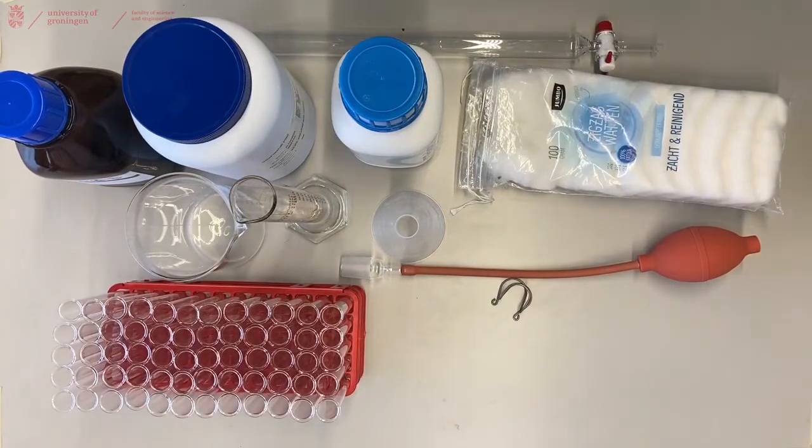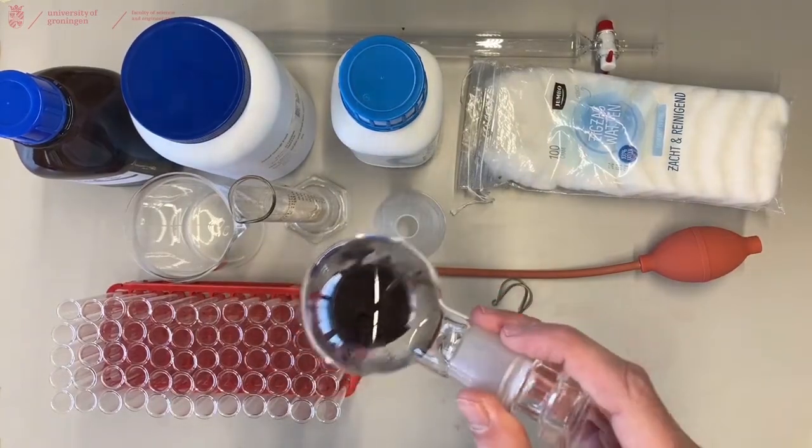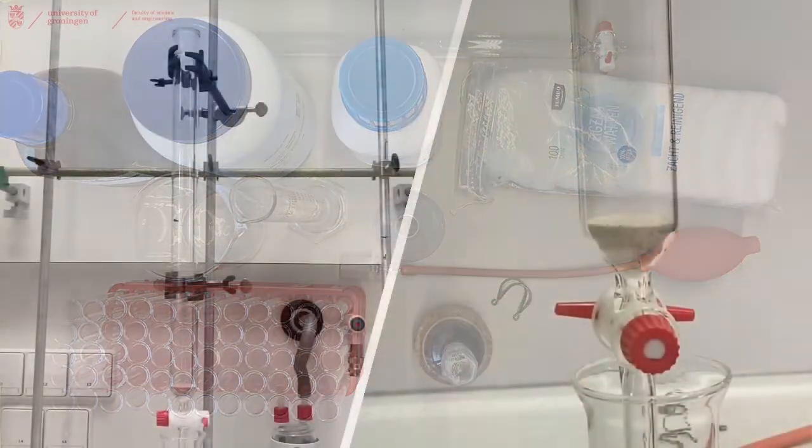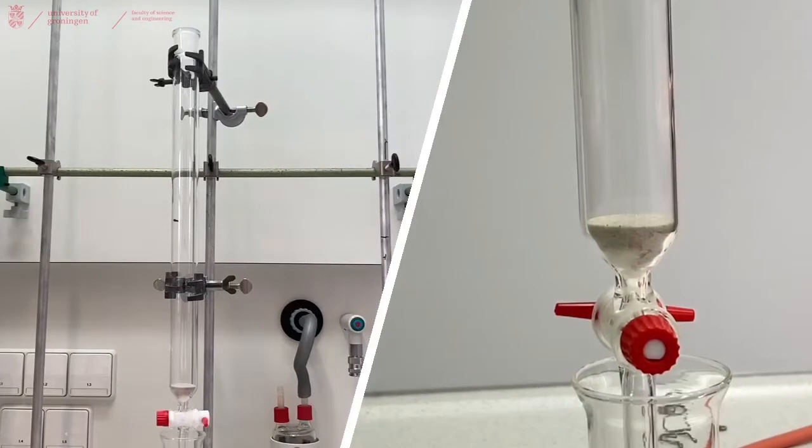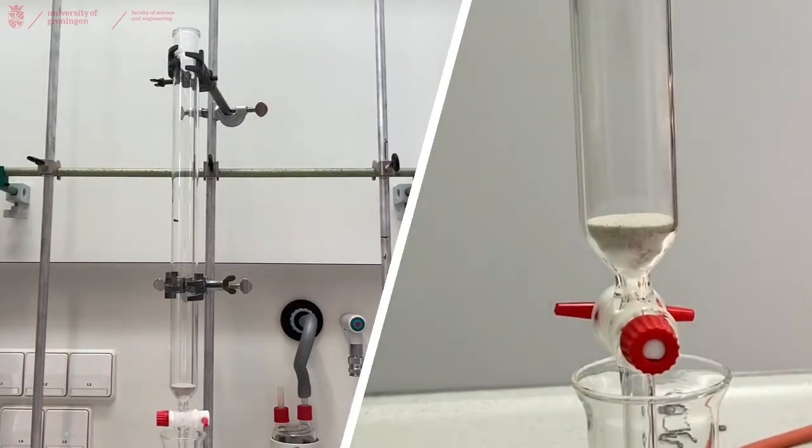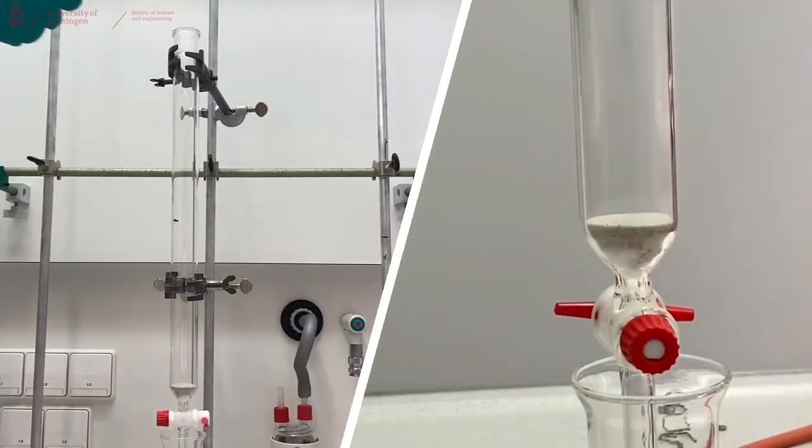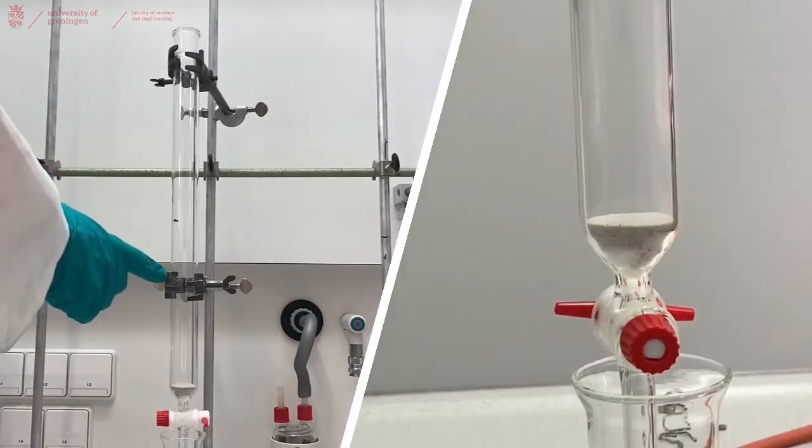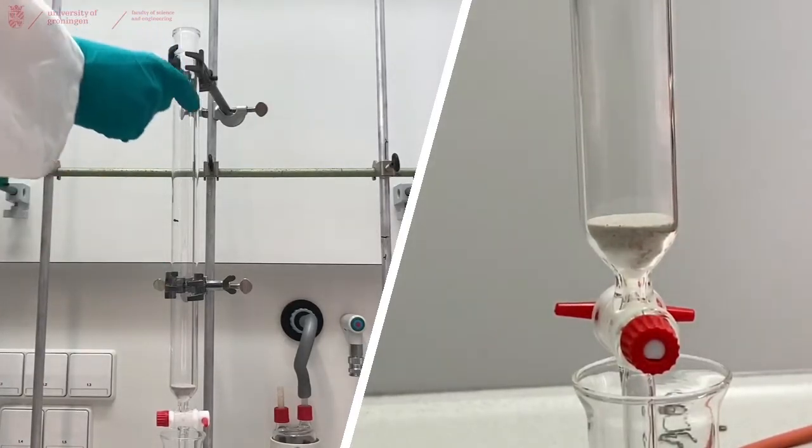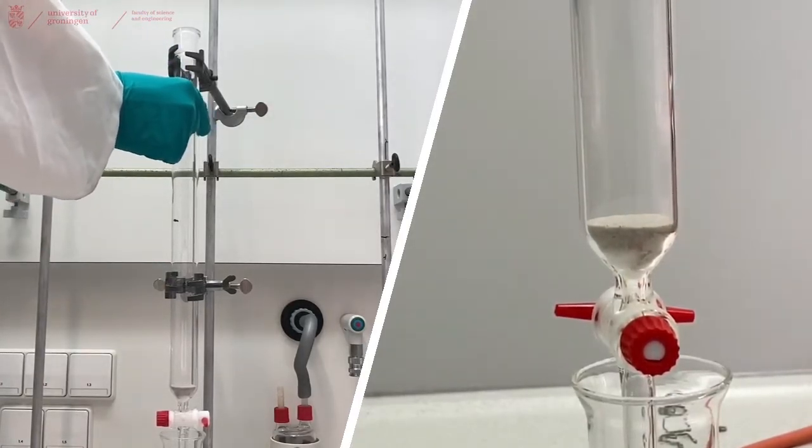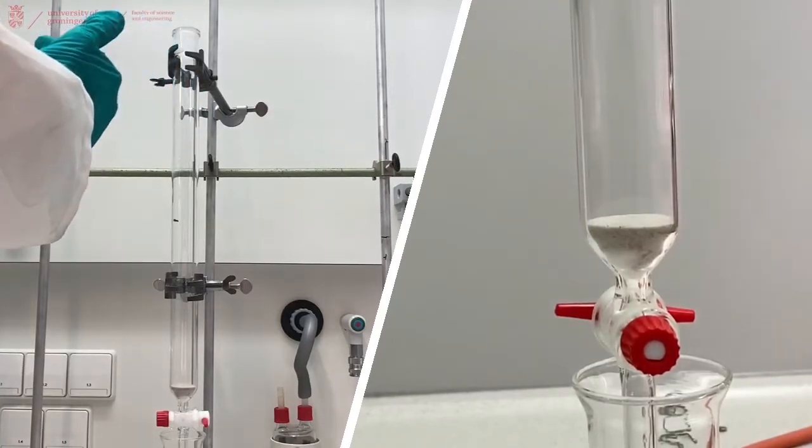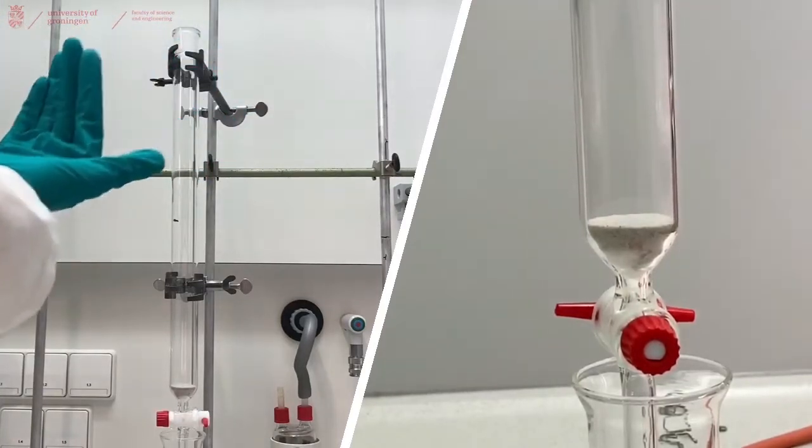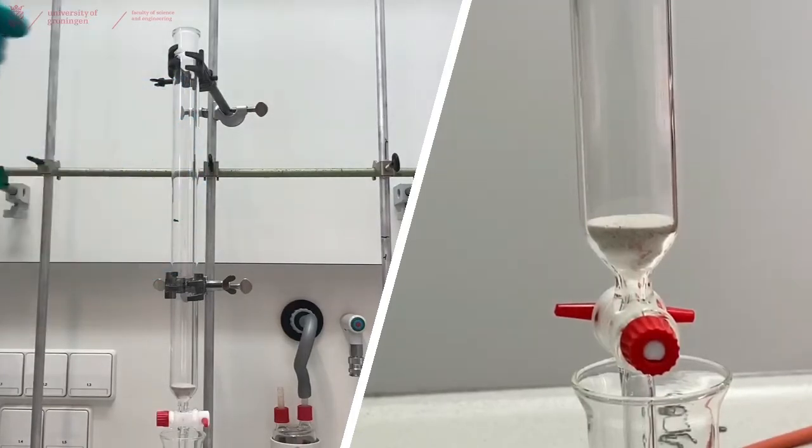And of course, you will need your crude product which you want to column. We already placed the column in our fume hood in this shot, and we placed it with two clamps: one on the top and one somewhere in the middle. Make sure that these clamps hold the column tightly so it can't go anywhere and it is not tilted to any of the sides, backwards or forwards, to have a level flow through your column.